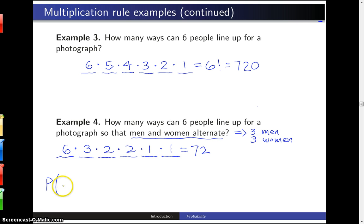What is the probability that men and women alternate? Well, in this case, the probability that men and women alternate will simply be the 72 ways where they do alternate divided by the 720 different possible ways to line them up for a photograph. So the probability is one-tenth that men and women will alternate, and that's the way probability problems are going to be solved using combinatorics like the multiplication rule.